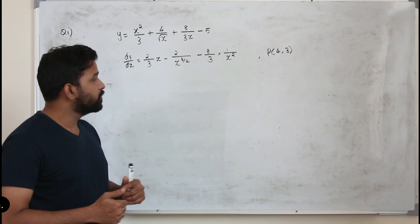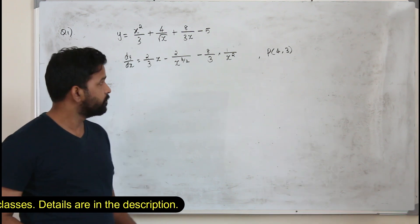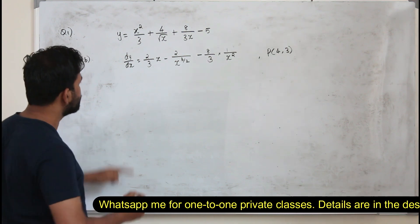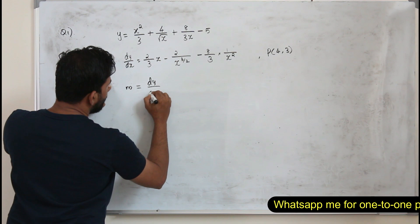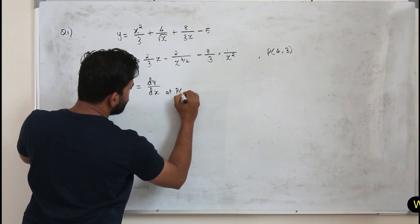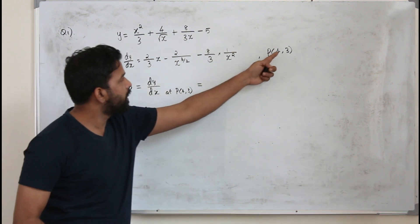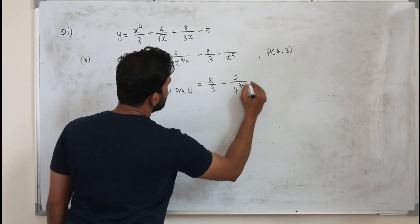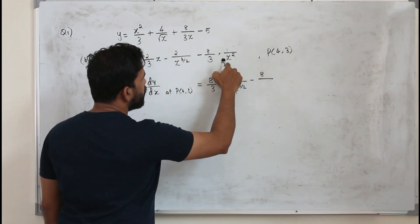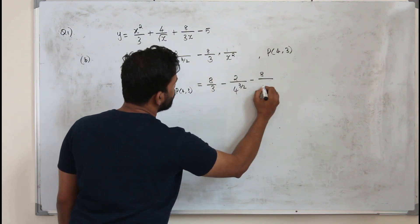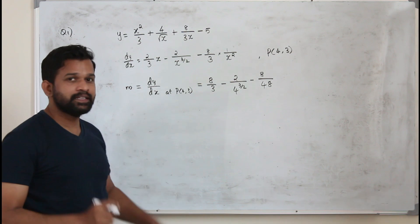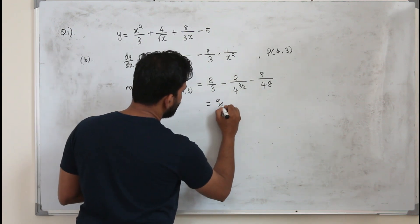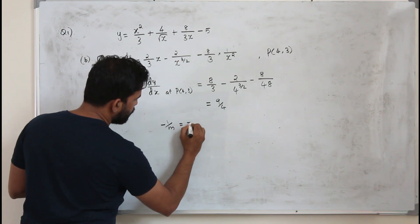To find the equation of the normal or tangent, you need to find the slope first using the gradient function — the first derivative of y with respect to x. The slope is the first derivative evaluated at the given point P(4, 3). Replace x with 4: it gives 8 over 3 minus 2 divided by 4 to the power 3/2, minus 8 over 3 times 16, which equals 48. Simplifying gives the slope of the tangent, so the negative reciprocal for the normal is minus 4 over 9.